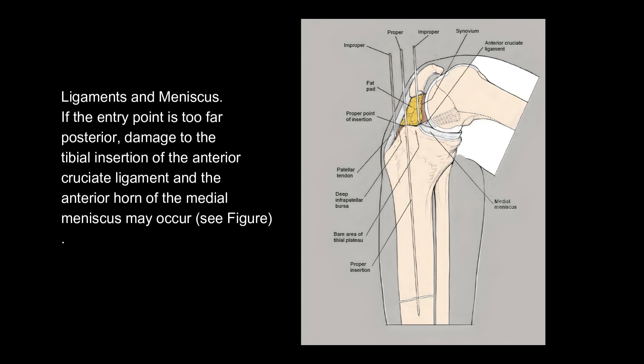Ligaments and meniscus: if the entry point is too far posterior, damage to the tibial insertion of the anterior cruciate ligament and the anterior horn of the medial meniscus may occur.